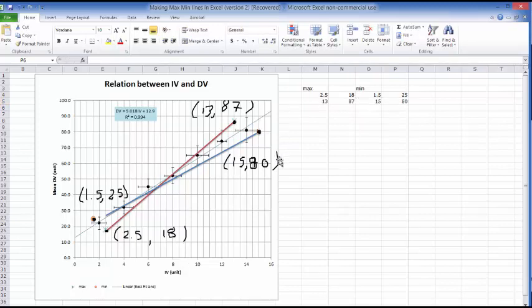Okay, so I've put all my data points in. So what I'm now going to do is add these points and make trend lines using those points. Because that will give me the equation of the maximum and minimum lines.